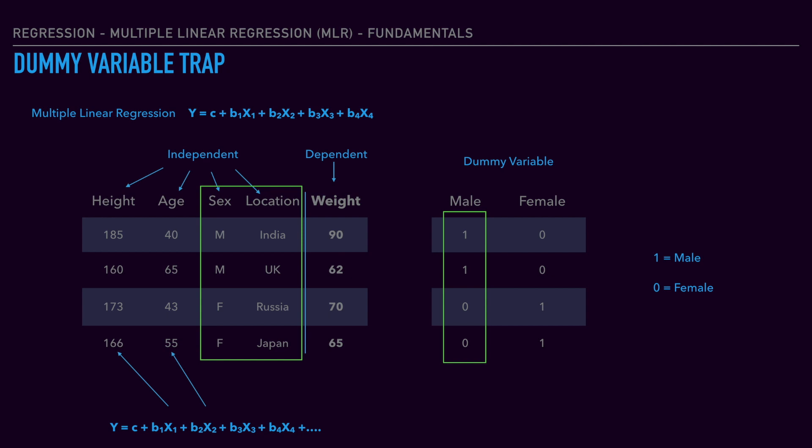This issue is called the dummy variable trap. According to the linear model assumption, there should not be any multicollinearity within the independent variables. Having two columns represent the same data means there will be multicollinearity and duplication. For these two reasons, we should eliminate either the female column or the male column — remove the female column and keep just the male column. This is how we eliminate the dummy variable trap.